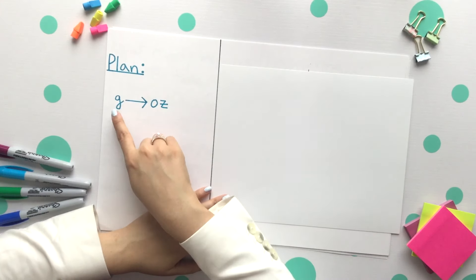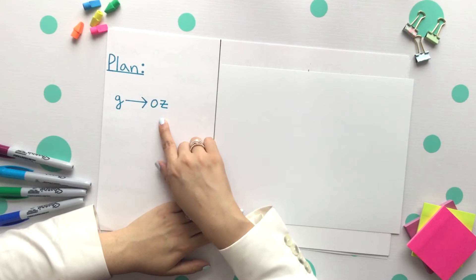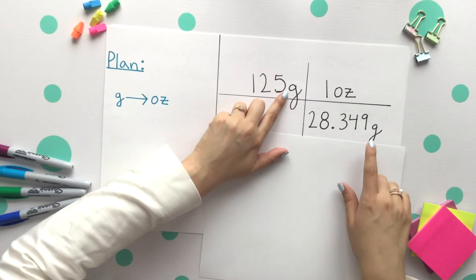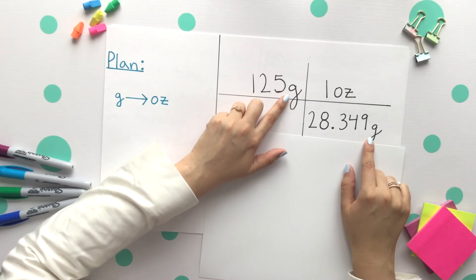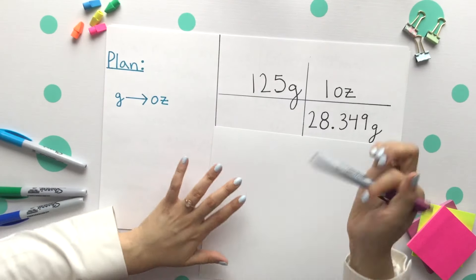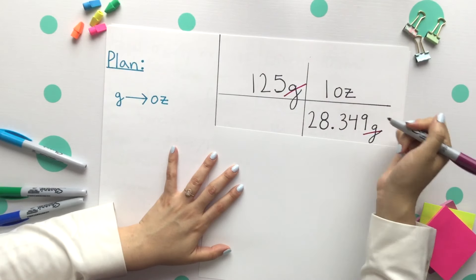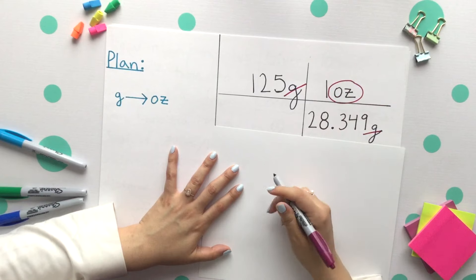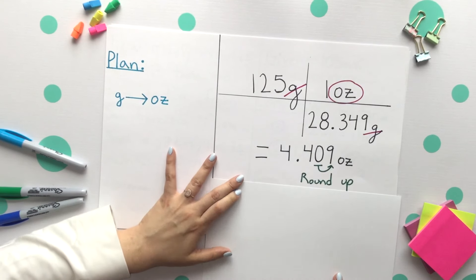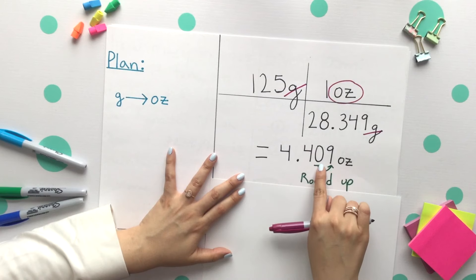The plan is to go from grams to ounces. The proper setup is having your given on top. Diagonally, we'll place the grams across from each other so our units will cancel. Grams would then cancel and we'd be left with our ounces. You just divide these two numbers. You end up getting 4.409 ounces.